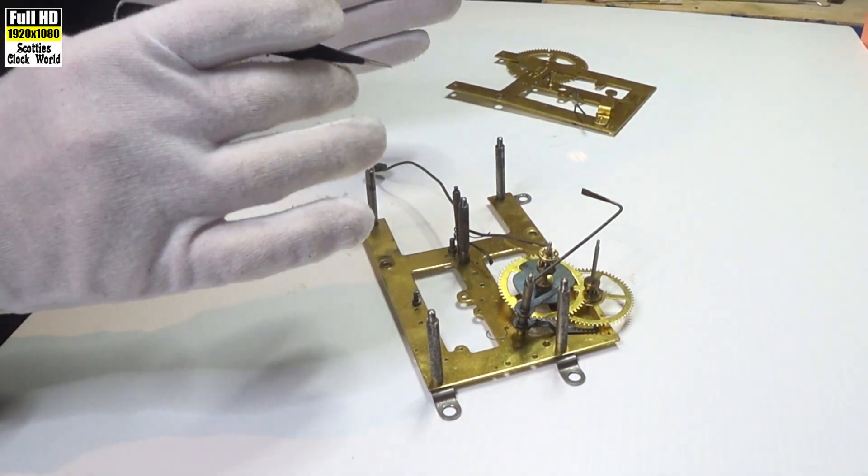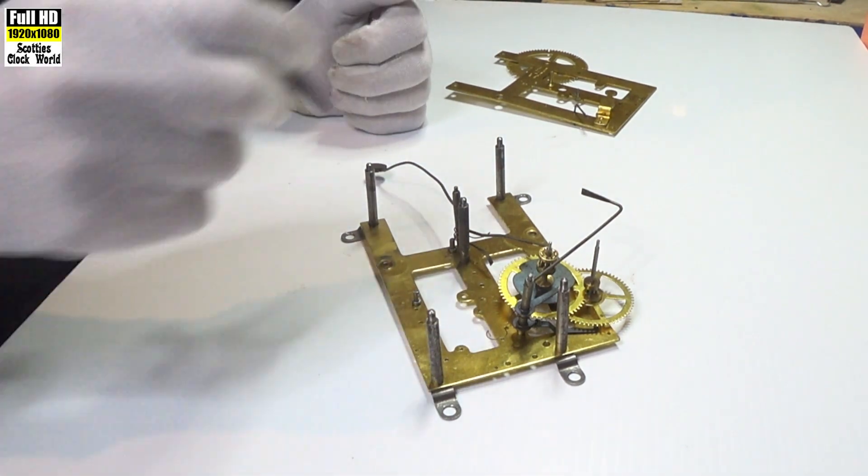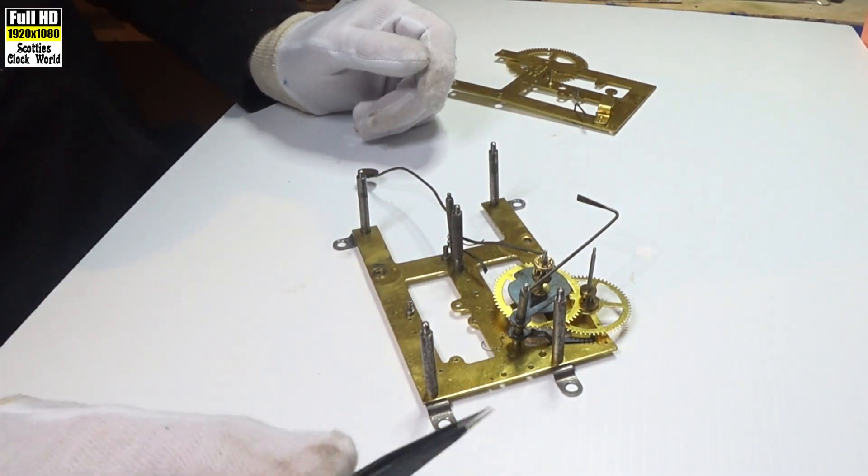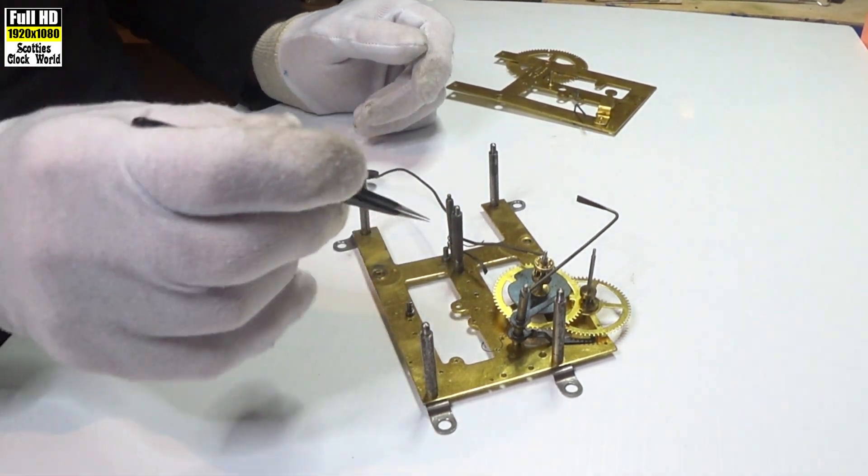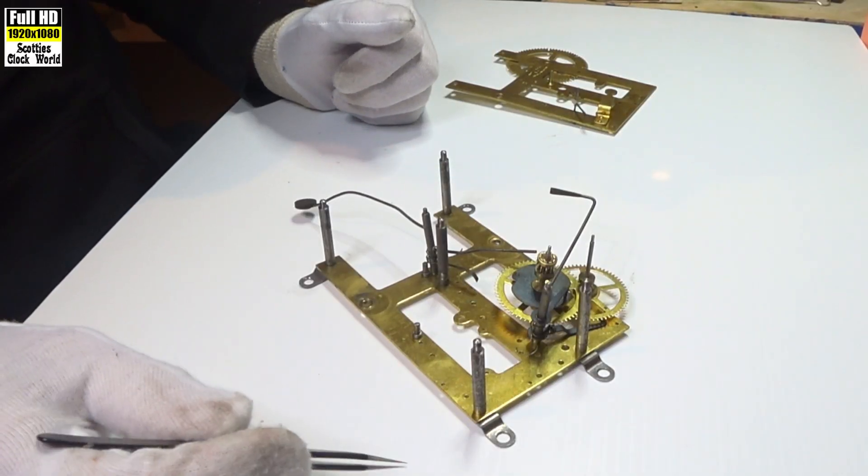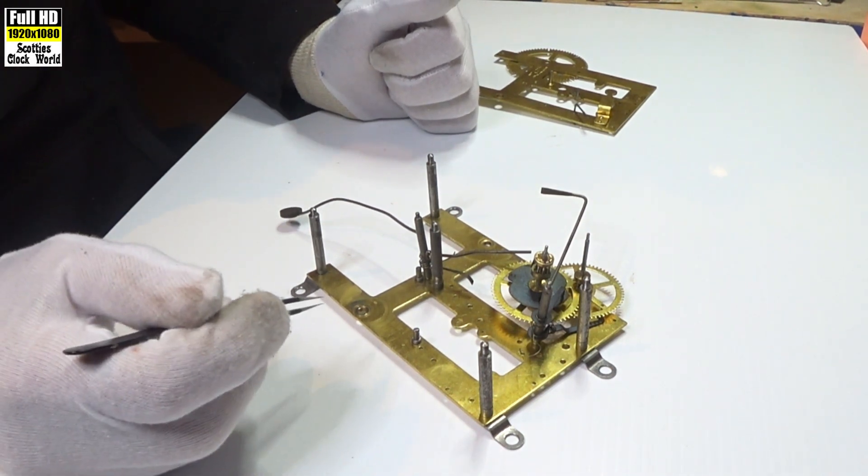The reason you have a warning wheel is because by the time the power from the mainspring gets up to this end of the train, there's not a lot of power in it. So to make sure there's sufficient power to run the strike, the movement goes into warning. The levers start to lift a little so that the power can then run through the train.